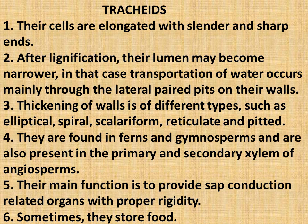Thickening of walls is of different types, such as elliptical, spiral, scalariform, reticulate and pitted. They are found in ferns and gymnosperms, and are also present in the primary and secondary xylem of angiosperms. Their main function is to provide sap conduction related organs with proper rigidity. Sometimes they store food.